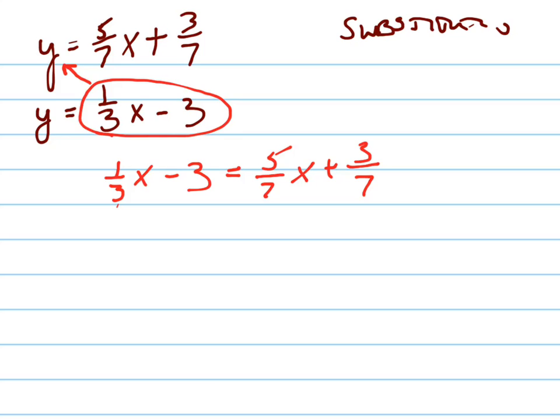Now the trick for this one is to clear your fraction. It makes your problem so much easier to deal with if you get rid of all your fractions. So the way I do that is I multiply the entire equation — both sides — by 3 and 7. I could have said 21, but I'm going to say 3 and 7, and you'll see why. Remember, I've got to distribute that into every term.